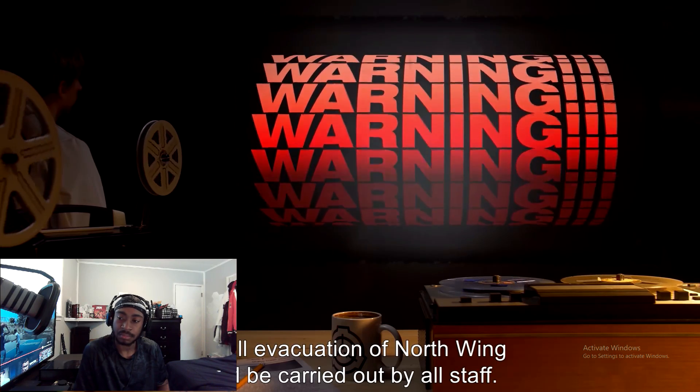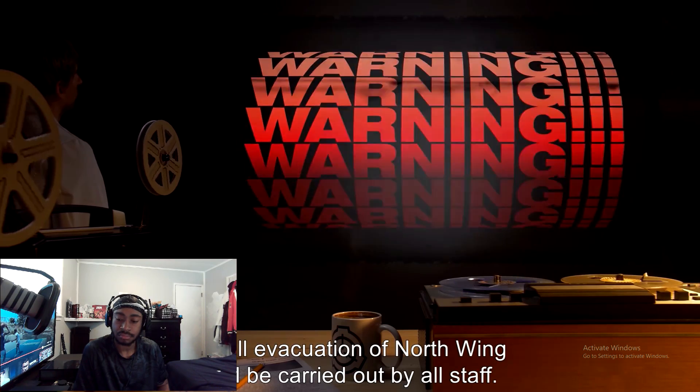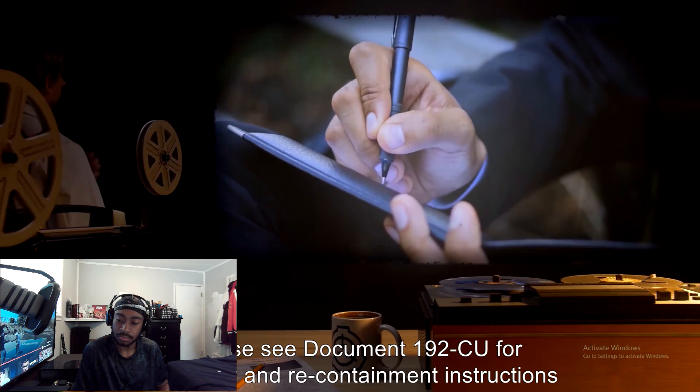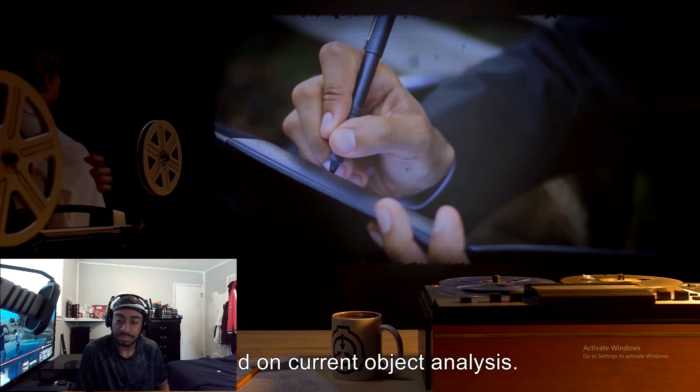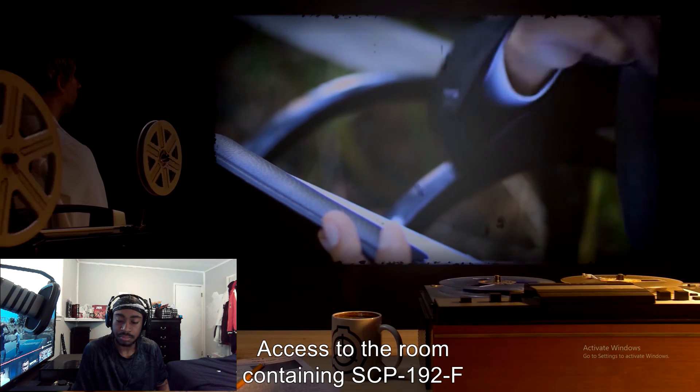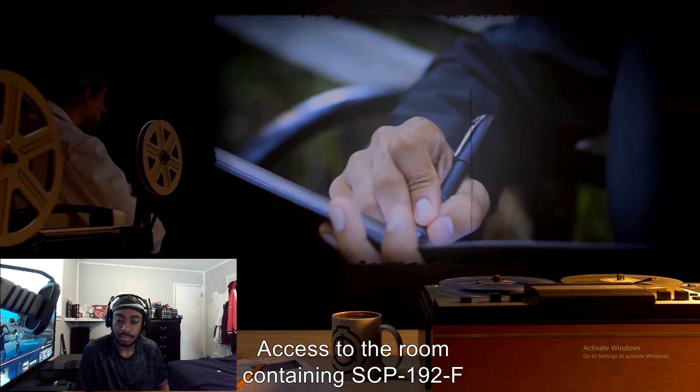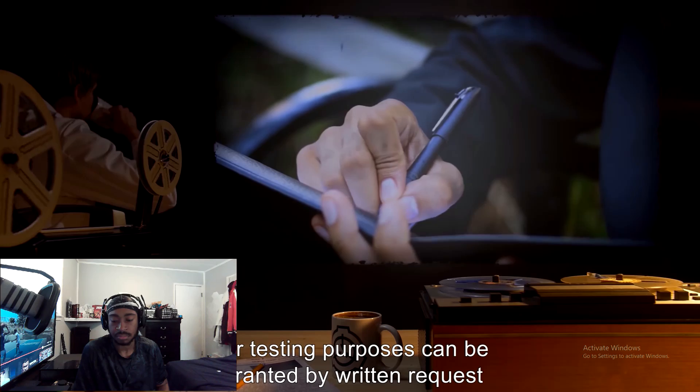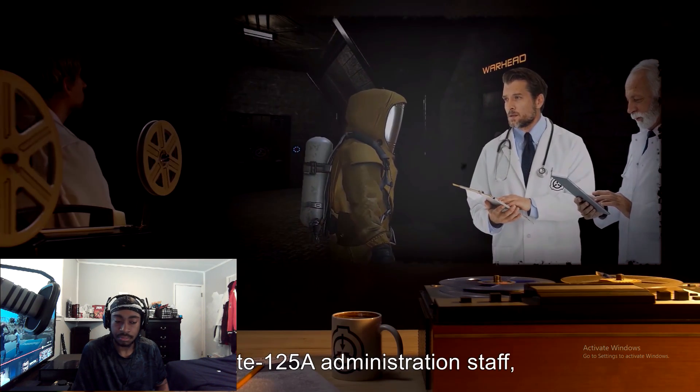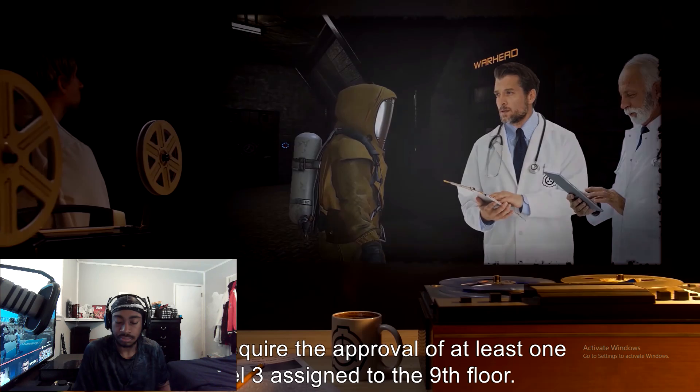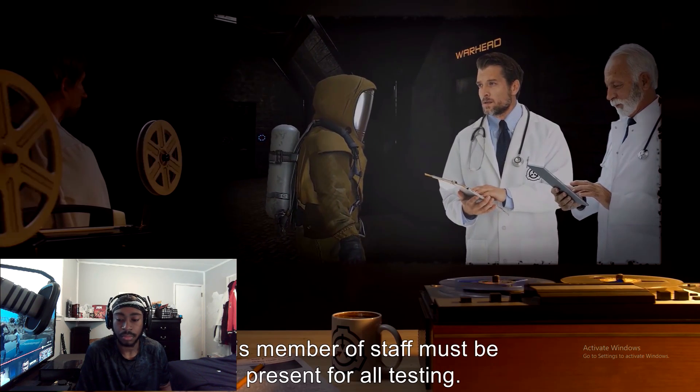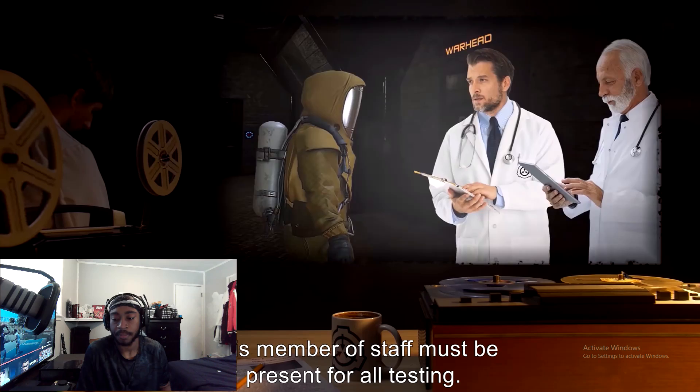And a full evacuation of North Wing will be carried out by all staff. Please see Document 192-CU for cleanup and recontainment instructions based on current object analysis. Access to the room containing SCP-192-F for testing purposes can be granted by written request to Site-125-A administration staff, but will require the approval of at least one level 3 assigned to the 9th floor. This member of staff must be present for all testing.